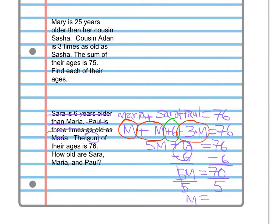70 divided by 5 is 14, so Maria's age is 14. Sarah's age is 6 more than Maria's, so 14 plus 6 is 20. Paul's age is 3 times Maria's, so that's 42. We can check: 14 plus 20 is 34, and 34 plus 42 makes 76 — that checks out. Excellent. The other two problems above are done in exactly the same way; they should be a little easier as they involve fewer steps. If you have any questions, please feel free to call Mr. Schlepper or myself. Let's take a look at the backside now.